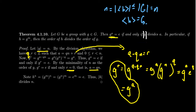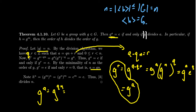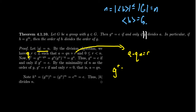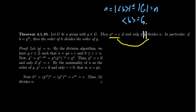Going the other direction: if the order of G divides a, we get a equals Q·N. Then G to the a equals G to the Q·N, which equals G to the N to the Q, which is the identity to the Q, which is still the identity. That proves the if-and-only-if statement. So if a power of G equals the identity, that power is divisible by the element's order, if and only if.